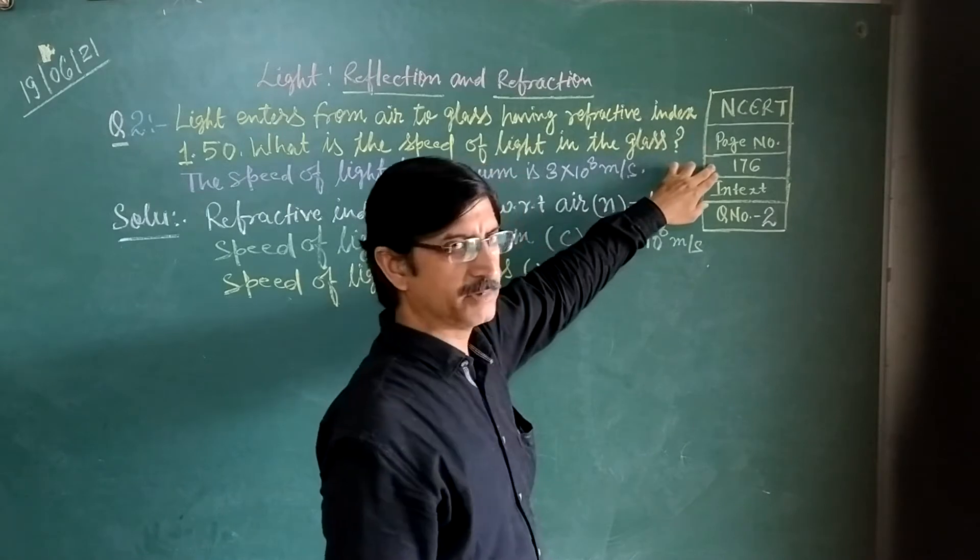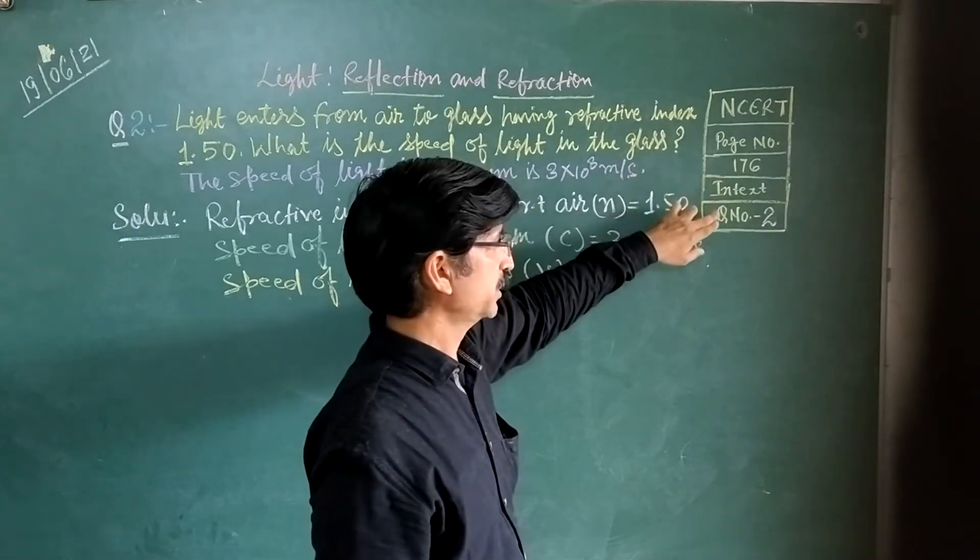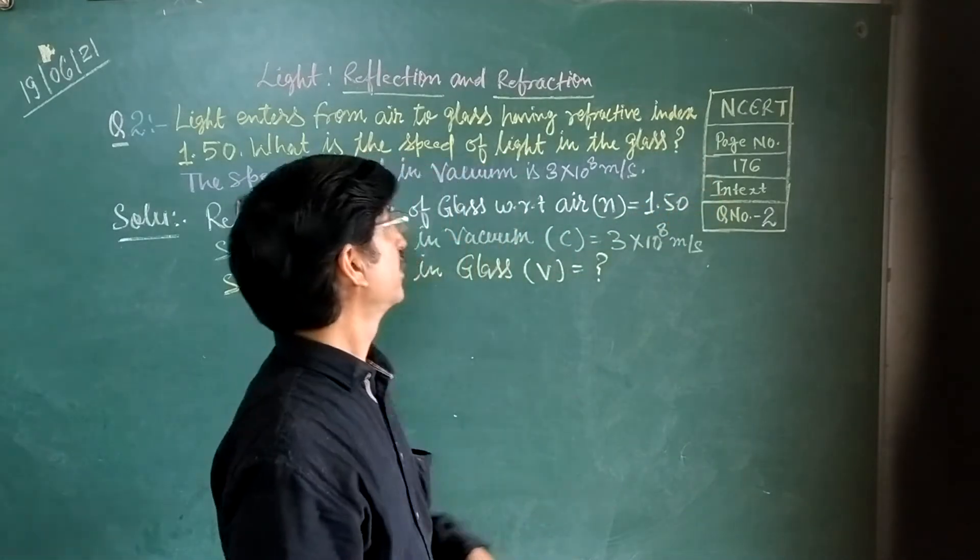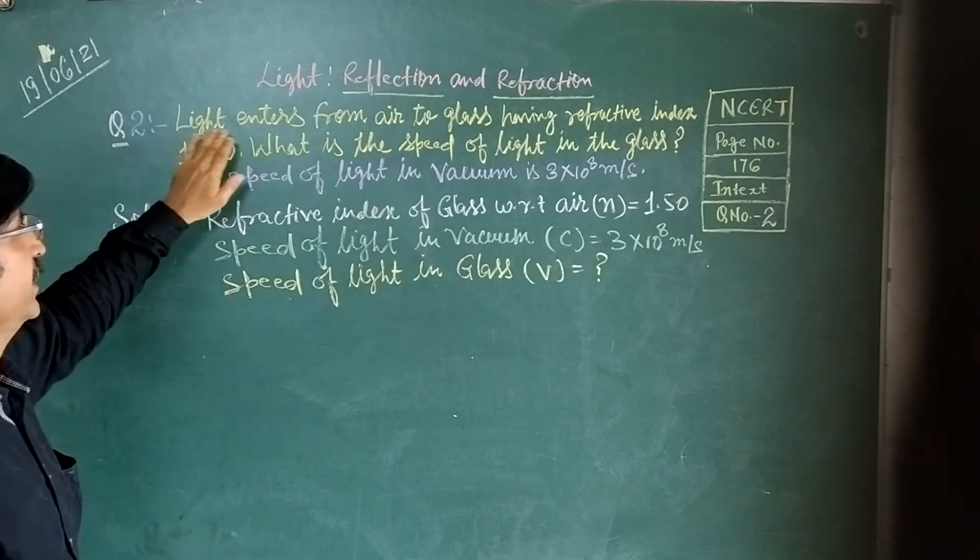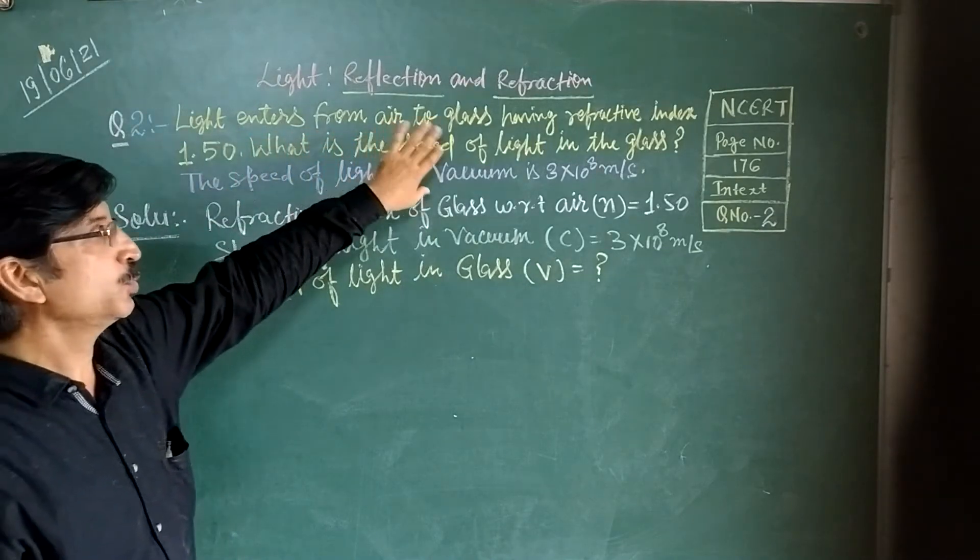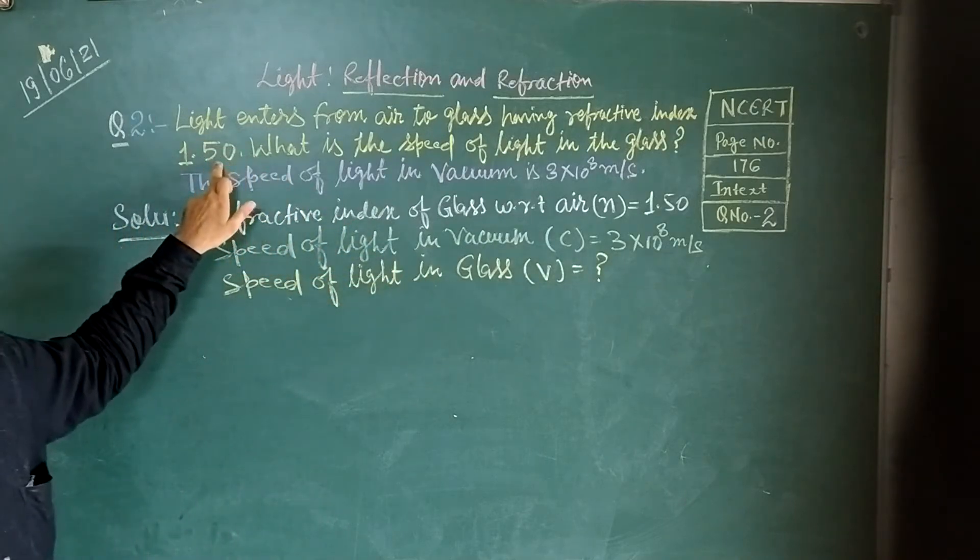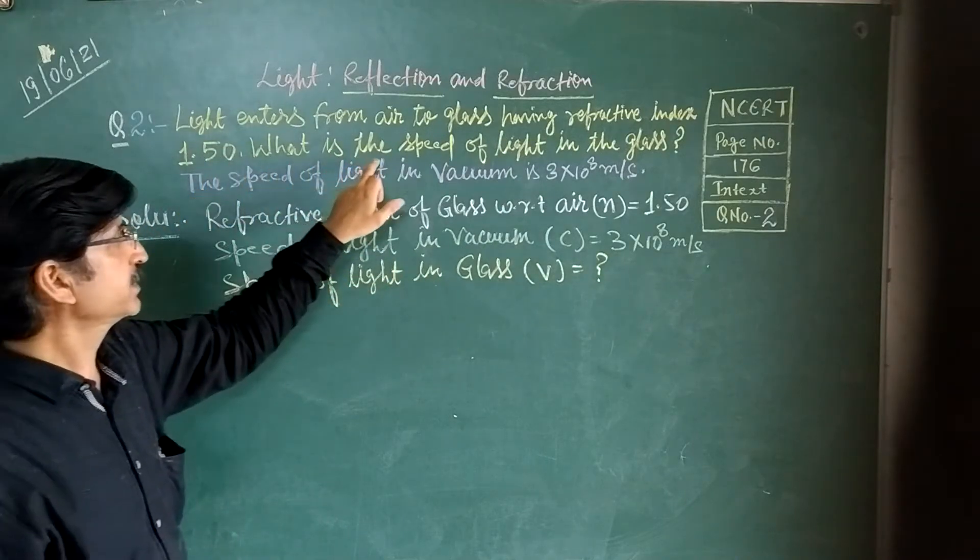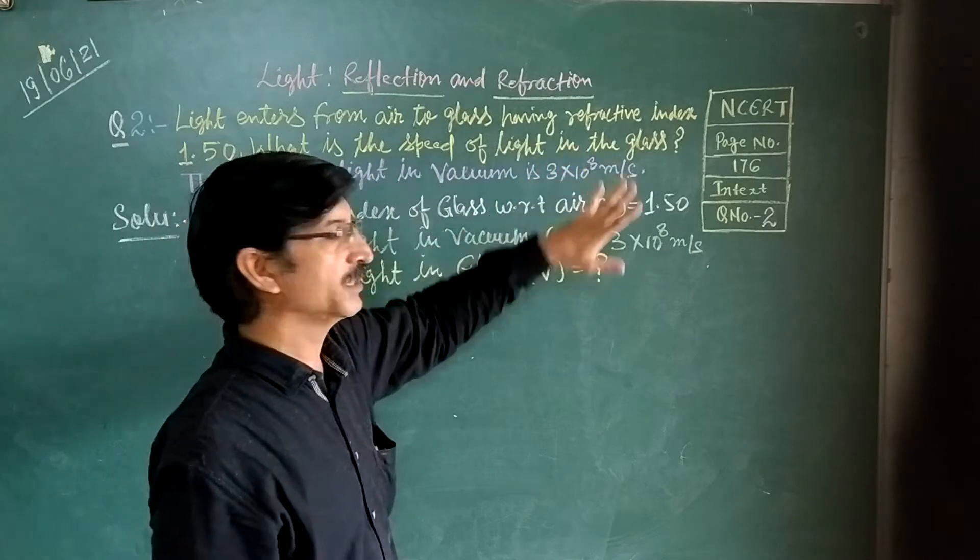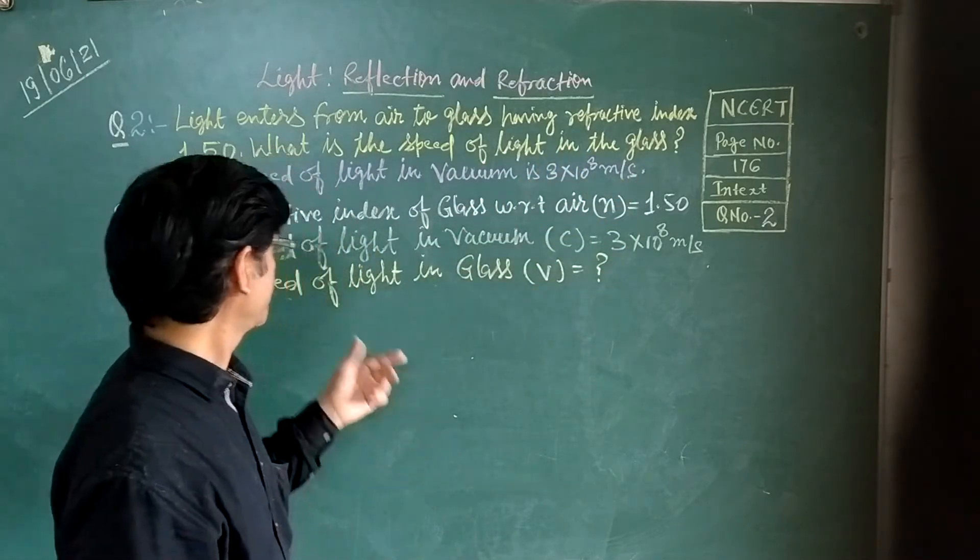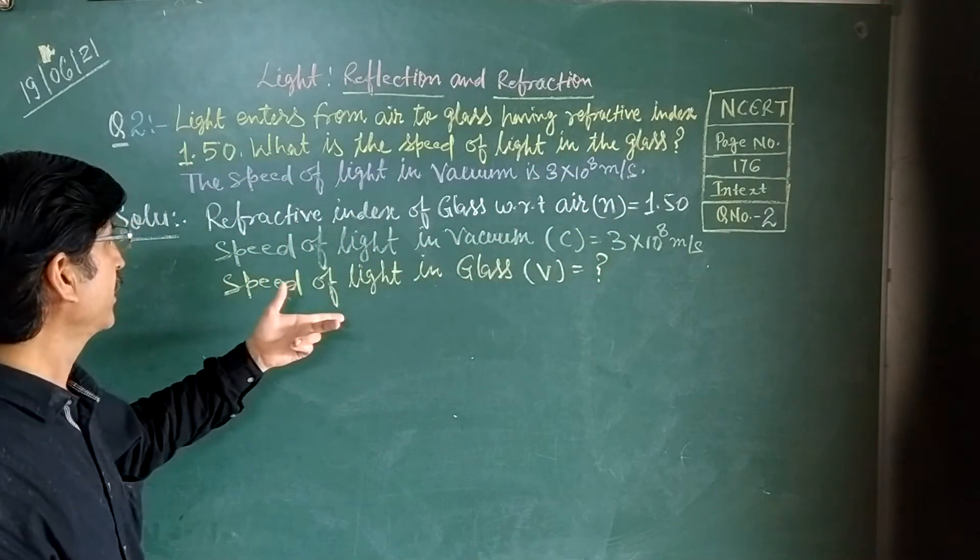NCERT case number 176, question number 2. The question is: light enters from air to glass having refractive index 1.50. What is the speed of light in the glass?